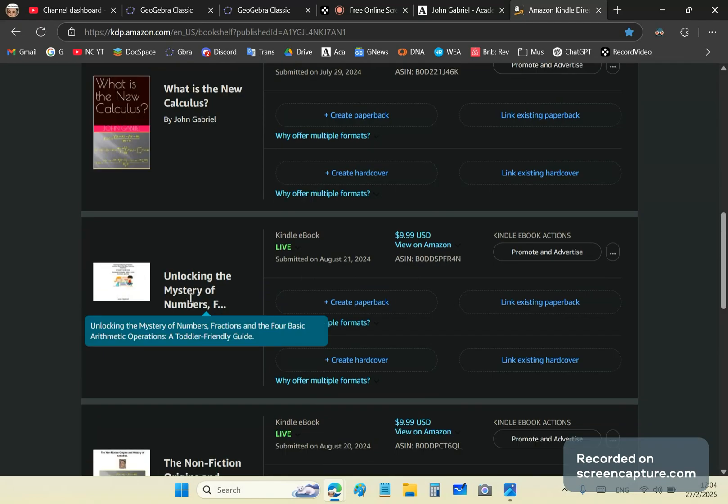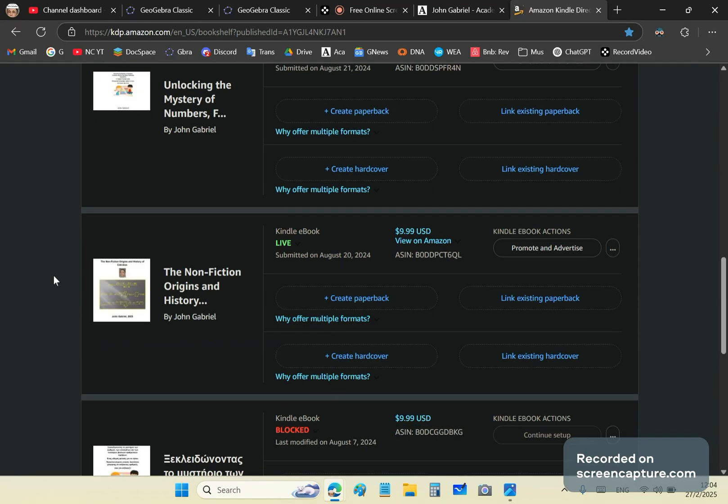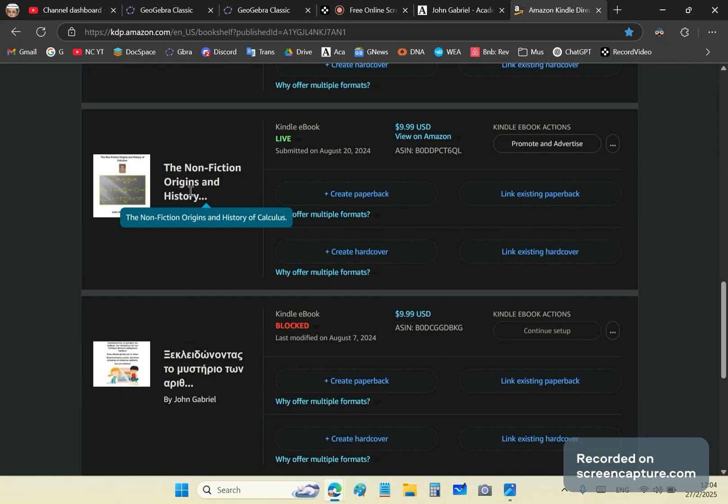This here is for teaching toddlers how to do numbers, fractions, and the four basic operations with fractions and everything, by the way. And the only requirement there is that they know how to count, like one, two, three, four, five. So it's a little bit watered down for toddlers. And then, of course, The Non-Fiction Origins and History of Calculus is a fascinating book.